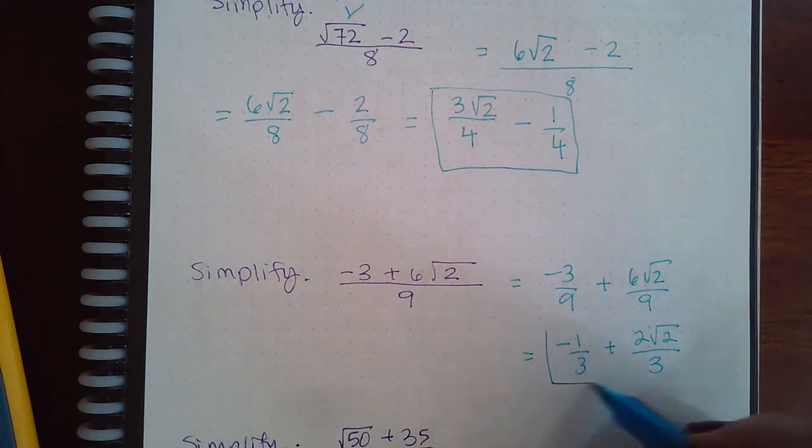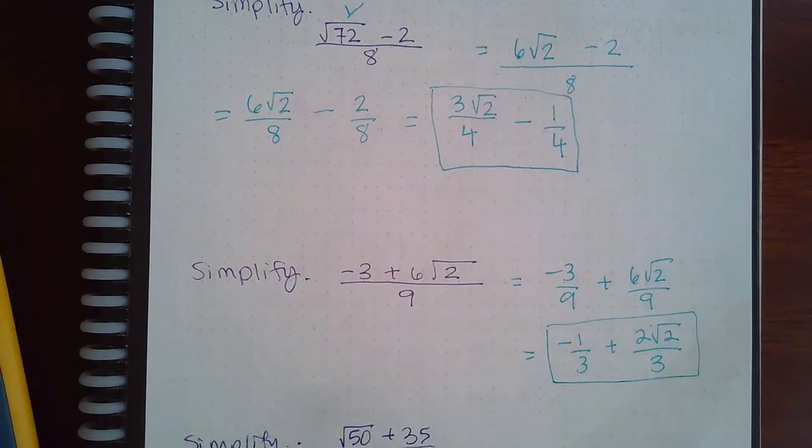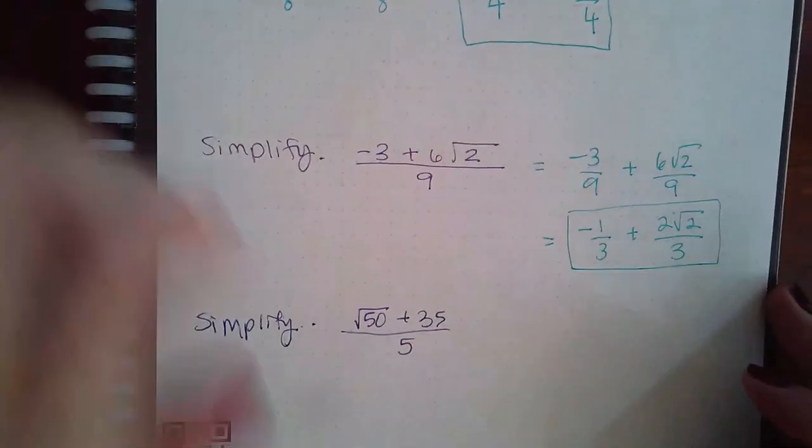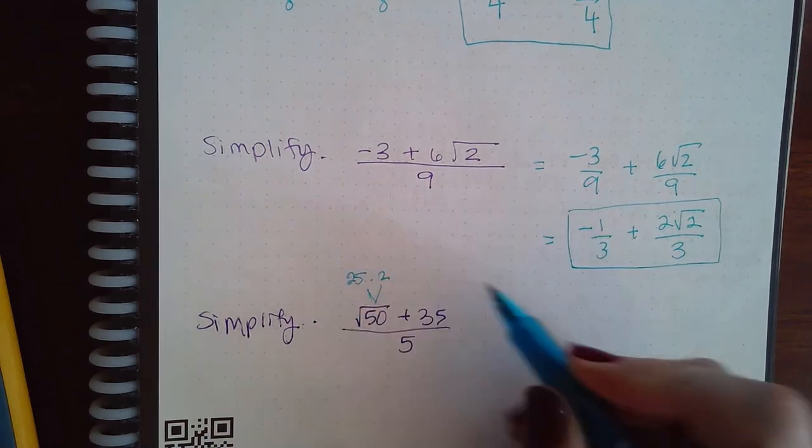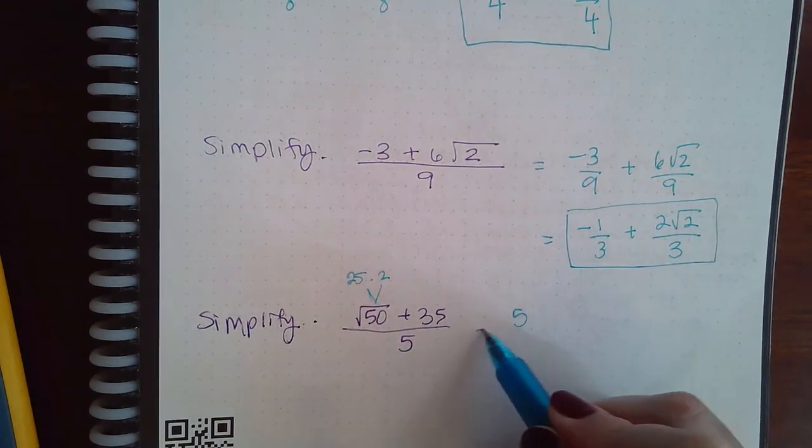For the last example, I do have to simplify the square root of 50. That is √(25 times 2). The square root of 25 is 5, there is no square root of 2 so it stays, plus 35 over 5.